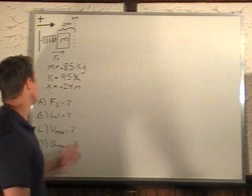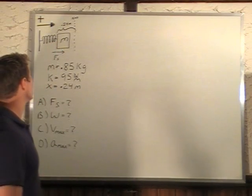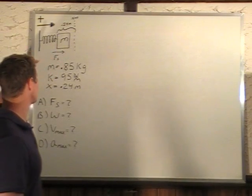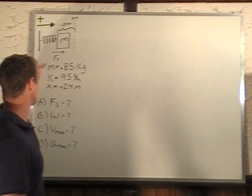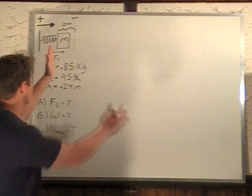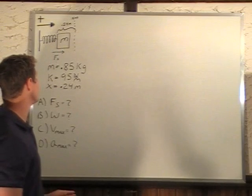In this problem, we have a mass at the end of a spring that is compressed. The mass is 0.85 kilograms, the spring constant is 95 newtons per meter, and x, the stretch in the spring, in this case actually compression in the spring, is 0.24 meters.